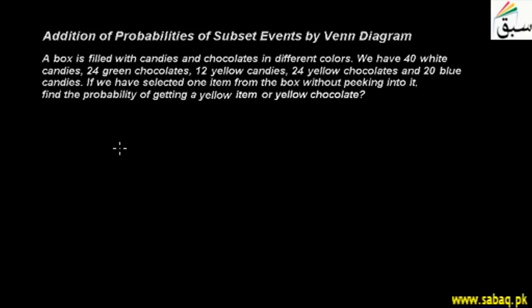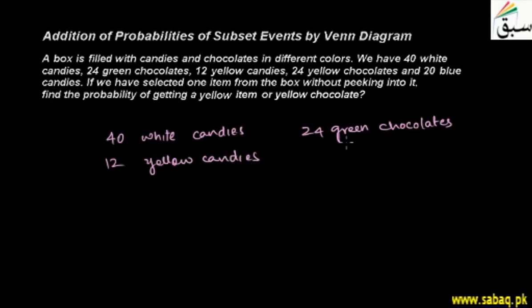Now let's see what items are in the box. 40 white candies, 24 green chocolates - we're talking about the wrapping color - 12 yellow candies, 24 yellow chocolates, and 20 blue candies. This represents everything in the box.